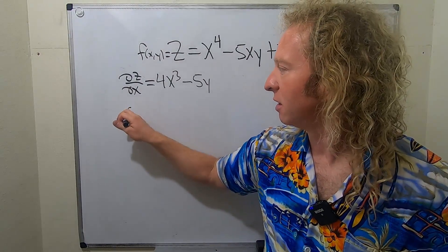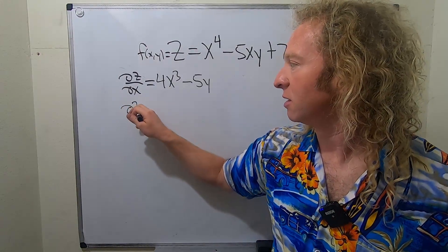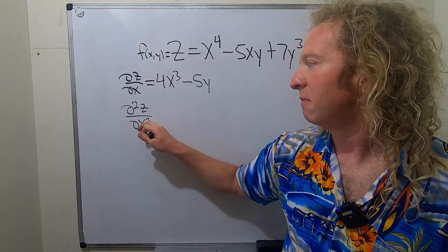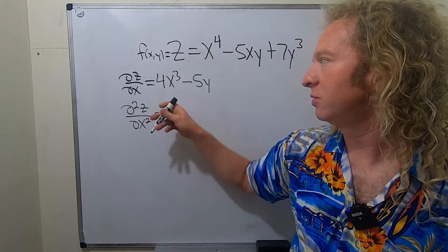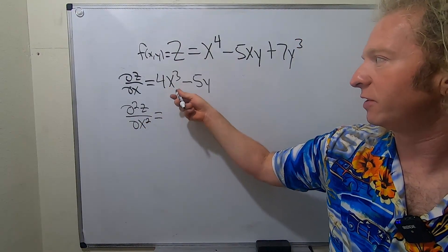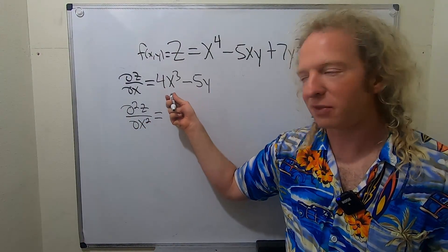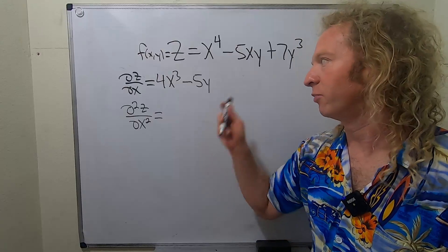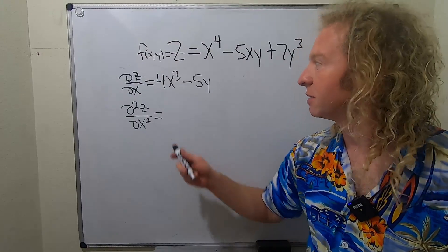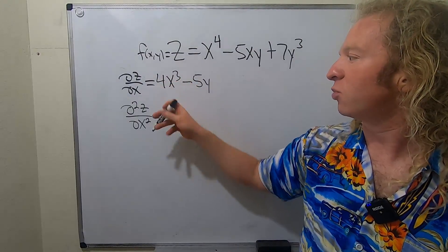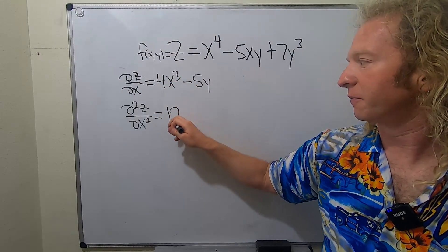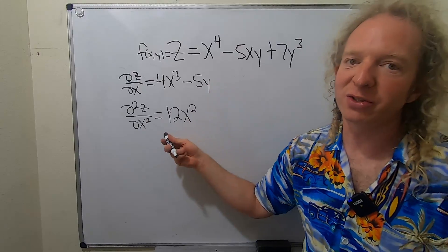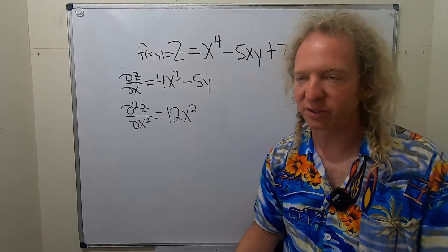Now let's find the second-order partial derivative with respect to x. Basically, this means you just take the derivative again. This is the notation for the second-order partial derivative with respect to x. It'll just be 12x squared, and this derivative is 0 because all the y's are constants.